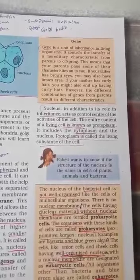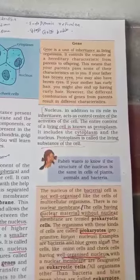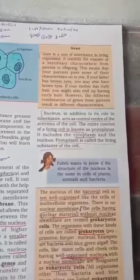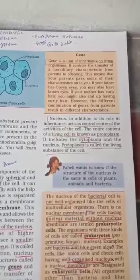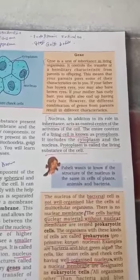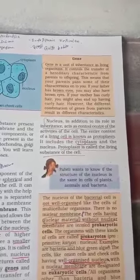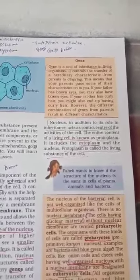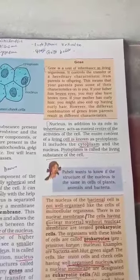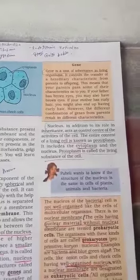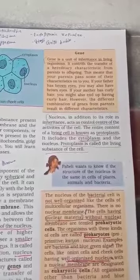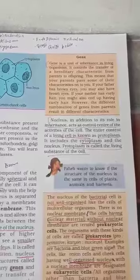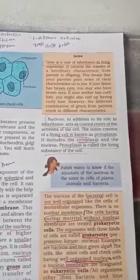Genes control the transfer of hereditary characteristics from parent to offspring. For example, if your father has brown eyes, you may also have brown eyes. If your mother has curly hair, you might also have curly hair. However, different combinations of genes from parents result in different characters.